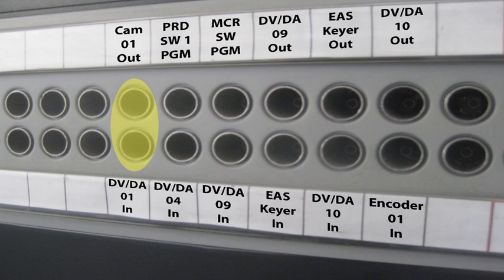The first patch point that we encounter in our tutorial is the camera 1 out to the DVDA1 input. This means that the output of camera 1 is connected, or normaled, to the input of DVDA1.